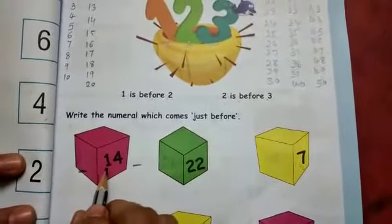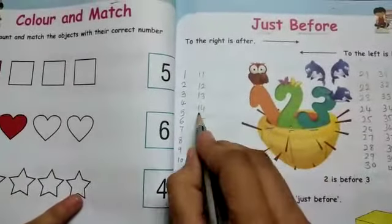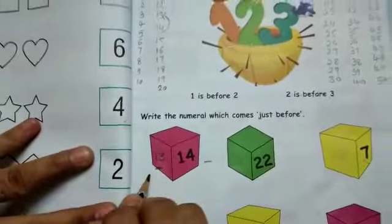To check the number 14. Aap pehle kaunsa number aata hai? 11 to 20 ke line mein check karo ho. 14 hai number, uske before, pehle kaunsa number aya? 13. Write down 13.